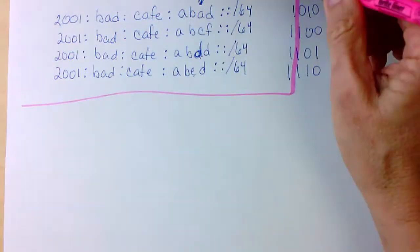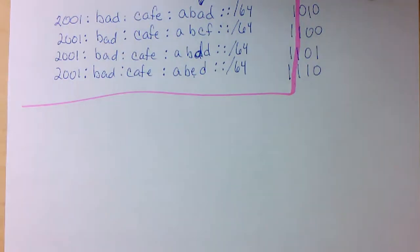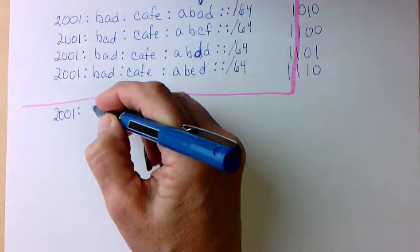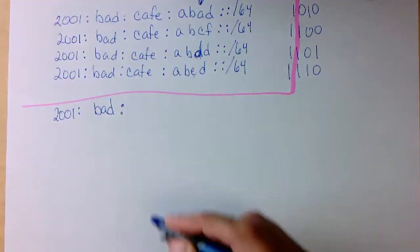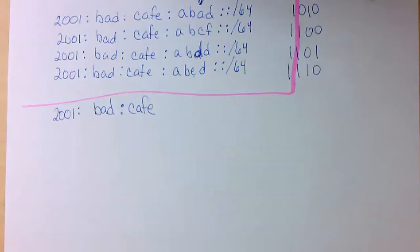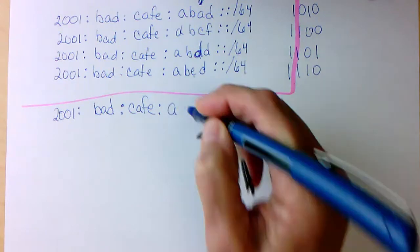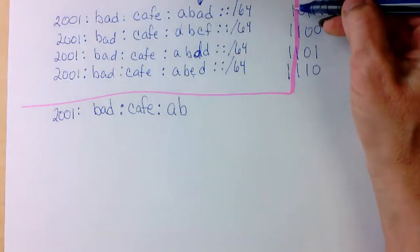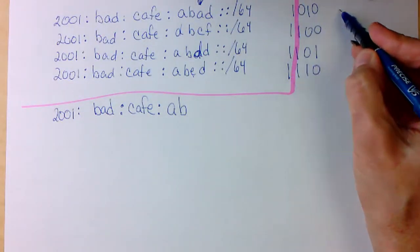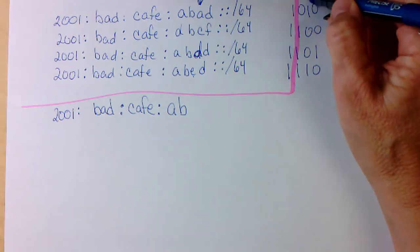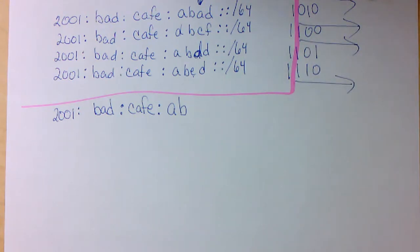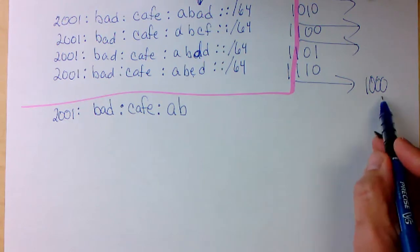That means everything over here is part of my summary network address. I know that my 2001 stays the same, bad stays the same, my cafe stays the same, A stays the same, B stays the same. So now I'm just looking here at this nibble. And what is this value? If I clear all of the host bits to zero, because I don't really care about anything over here, what value do I have? I have a value of eight.